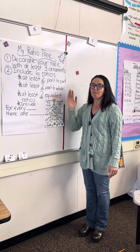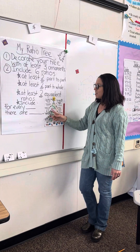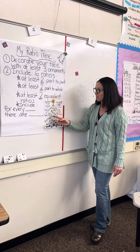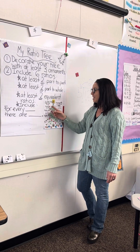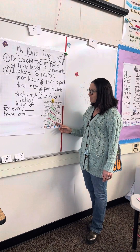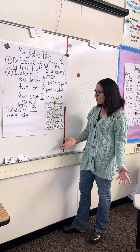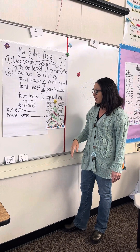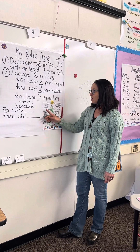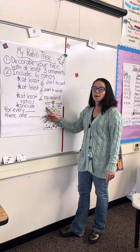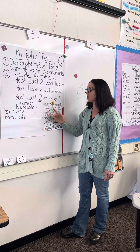Two of them need to have a part-to-part relationship. For example, there are nine green ornaments to eight pink ornaments. Then two of them need to be part-to-whole. Looking at a part-to-whole relationship, which would be the number of ornaments to the total — so pink to total.